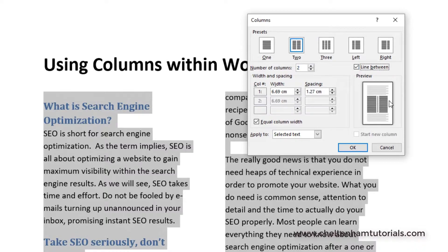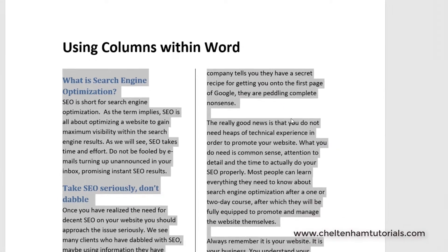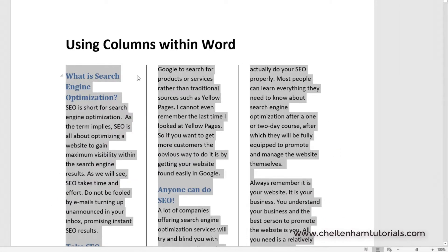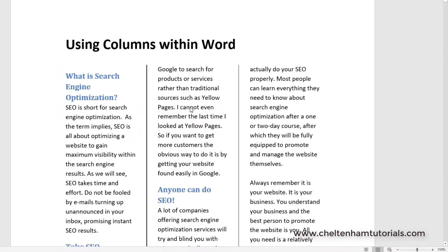You can also add a line between the columns. In More Columns, enable the Line Between option — you can see a preview of what it's going to look like. Click OK and you've now got a line between the columns. If you change to three-column mode you get a line between all three columns.